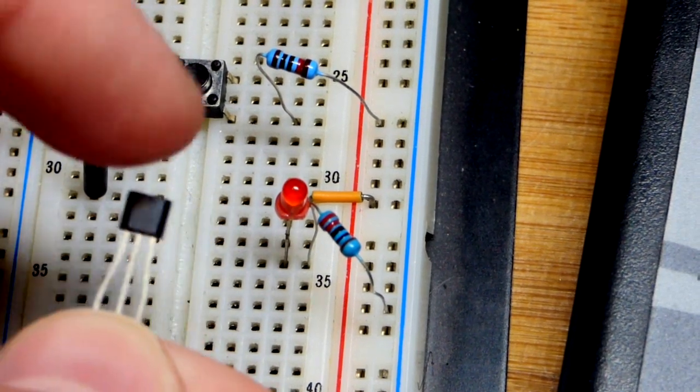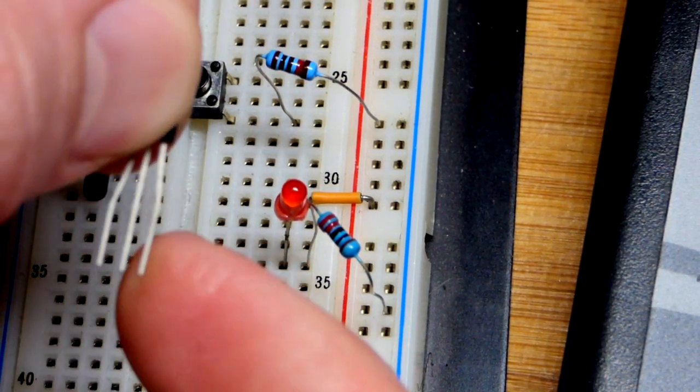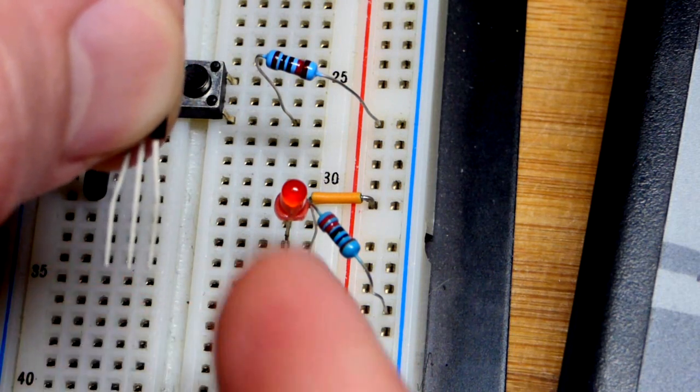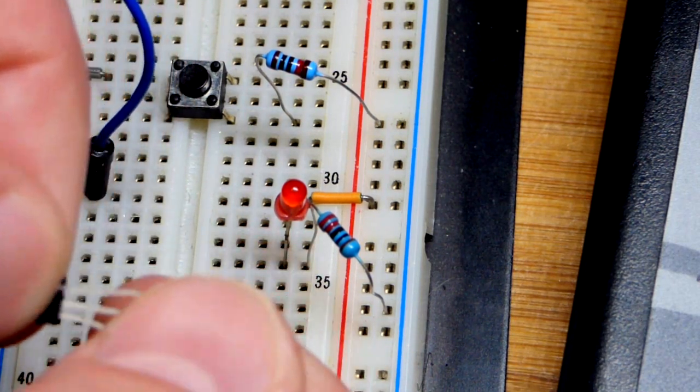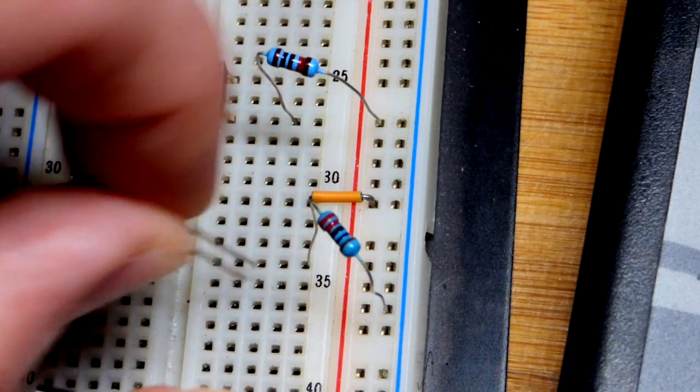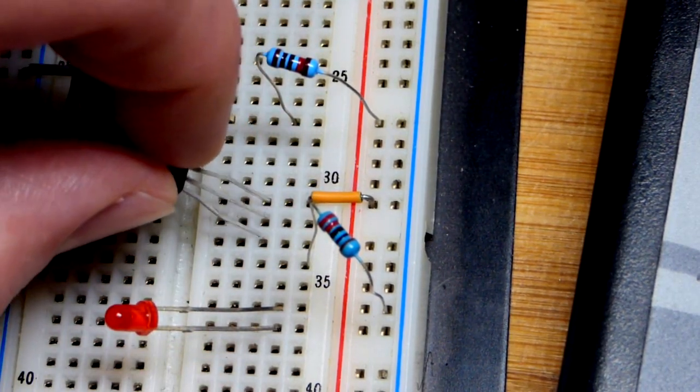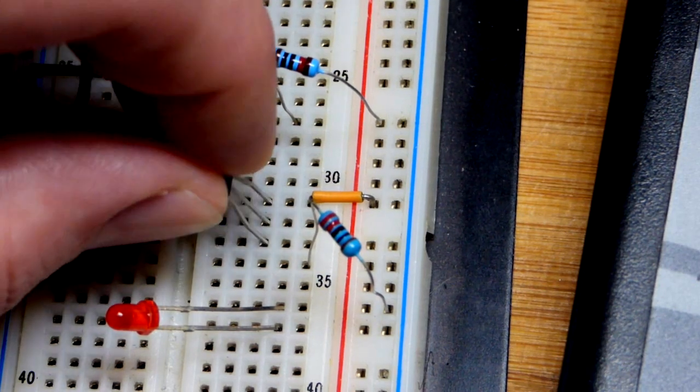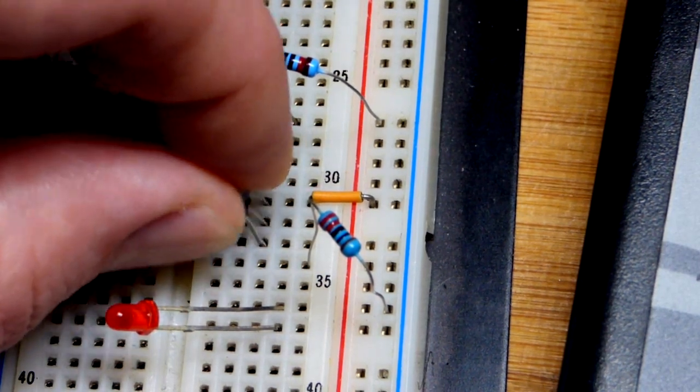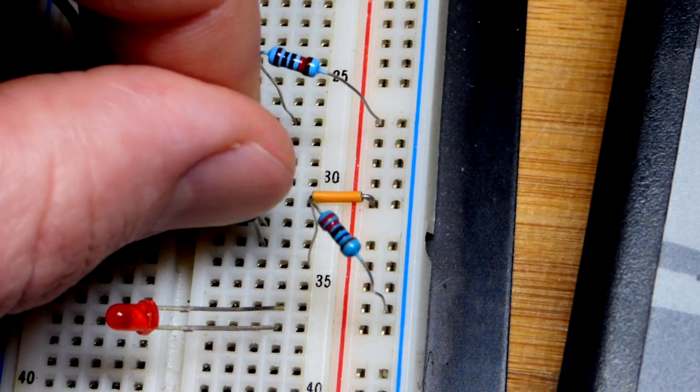The source is up here, the drain is over here. Source is pin 3. We'll remove that LED so we can get a better look, and we're going to connect that to the more positive side.